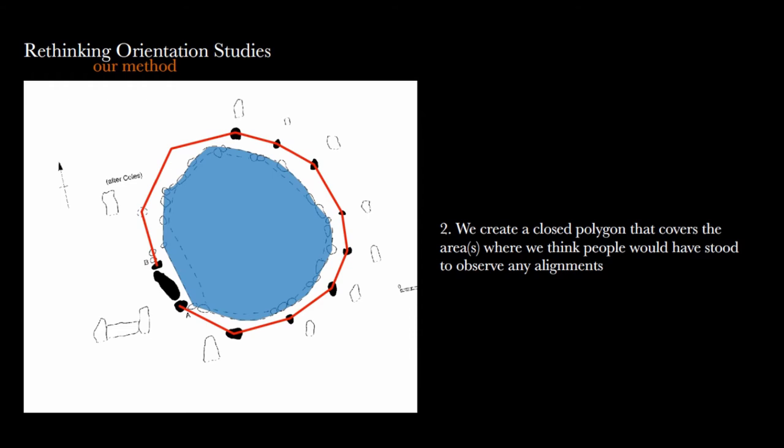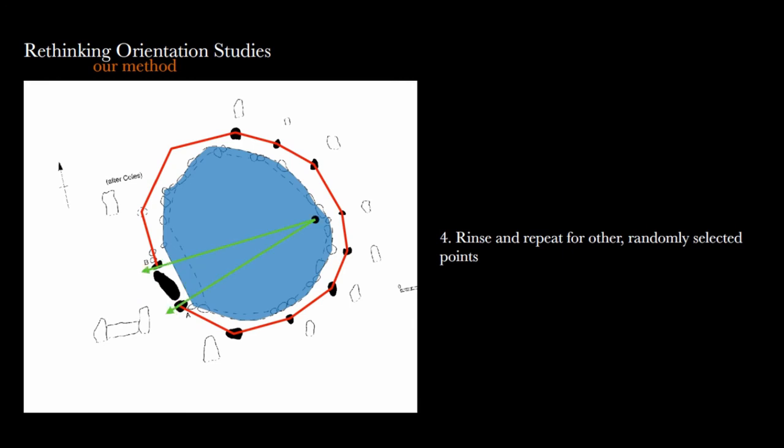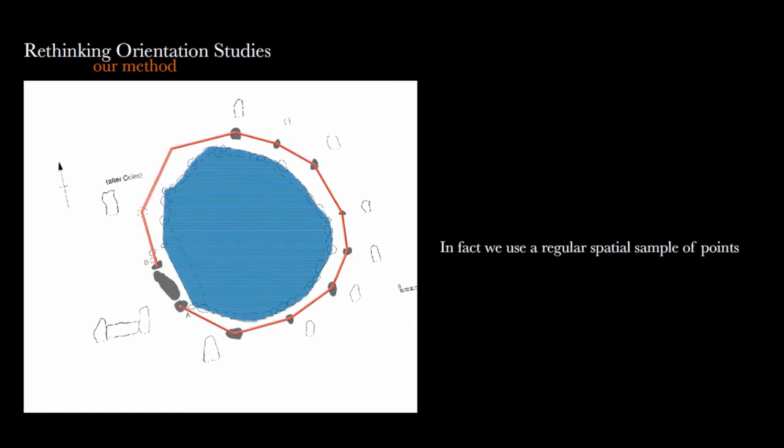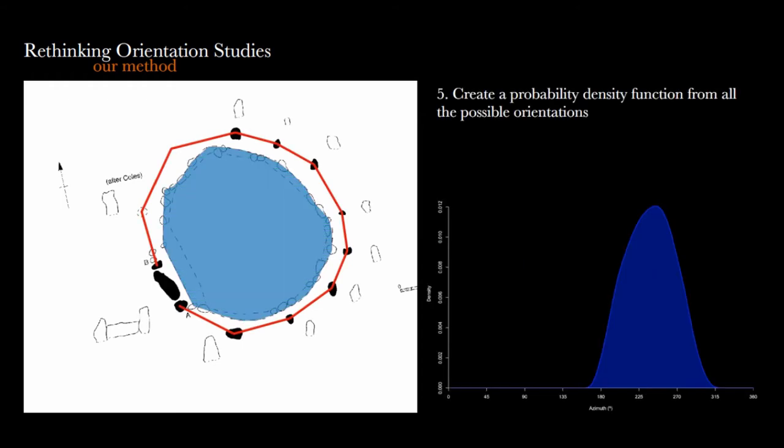Then you can take a point inside this area and obtain the range of orientations that don't touch the polygon—the azimuth range that goes through the recumbent arrangement. You can repeat this for another point, and another point. If you take a regular spatial sample of points in this area and repeat this for every single point, you will get a number of azimuth values that you can then use to get a probability distribution by simply using kernel density estimation, which is what I've done here. You can immediately see there's a huge range of azimuths possible from within that structure. It makes sense—these things aren't particularly big—and it peaks at a particular value. That's not a normal distribution, but it is a probability distribution, and we can now use it to do much more interesting stuff.